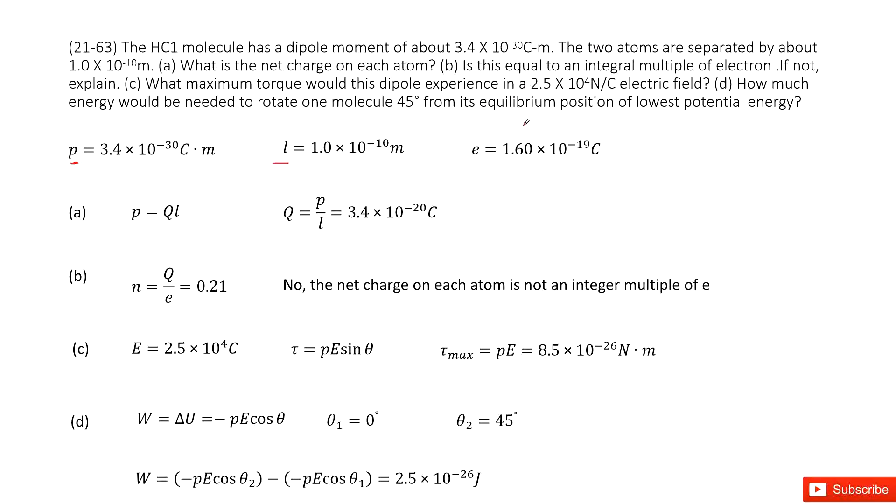We learned the fundamental charge is 1.6 times 10 to the negative 19 coulombs. First one asks for the net charge on each atom. We write down the function for the dipole moment. Dipole's moment is charge times the distance. So we can easily write the function for charge: charge is the moment divided by the distance. Input the known quantities, we get the answer here.